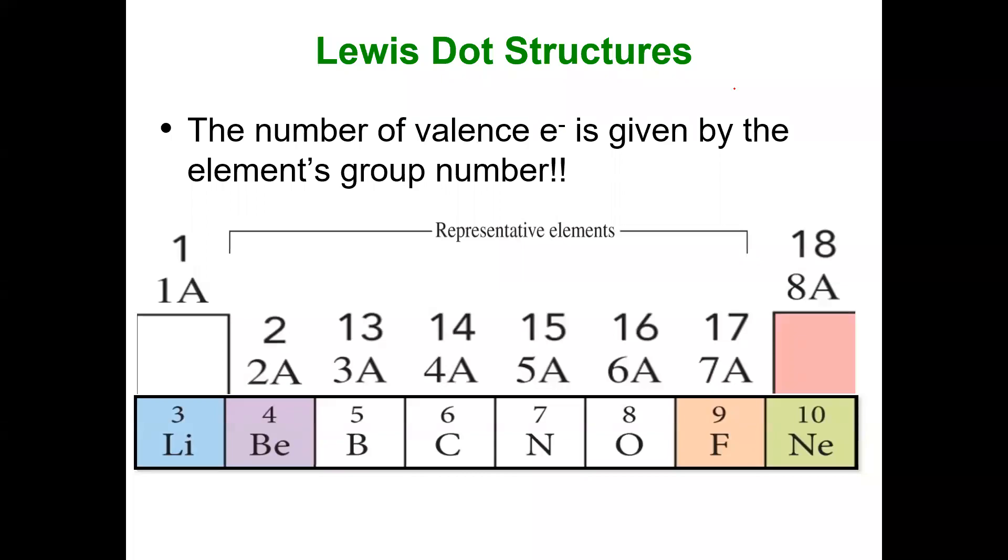Hi students. In the last video we discussed how we can derive Lewis dot structures simply by using group numbers that represent the number of valence electrons.